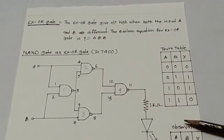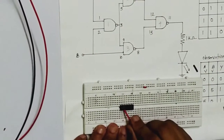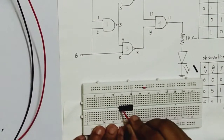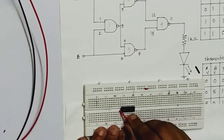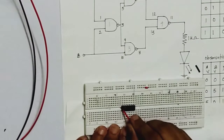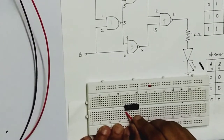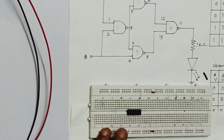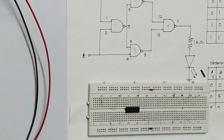Now this is your truth table. The IC is 7400. This is how to connect the IC properly. The notch is there — pin number 1 to 7 on one side and 8 to 14 on the other. Pin number 14 is VCC.